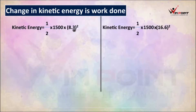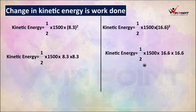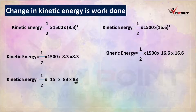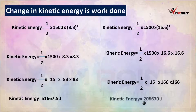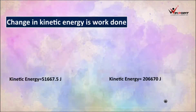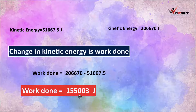Now we need to solve it. 8.3 squared is 8.3 into 8.3. So initial kinetic energy equals half into 1500 into 83 into 83, and final kinetic energy equals half into 1500 into 166 into 166, adjusting the decimal point accordingly. The initial KE works out to 51,667.5 J and the final KE to 2,06,67 J. Work done equals change in kinetic energy: 2,06,667 minus 51,667.5, giving an answer of approximately 1,55,003 Joules.